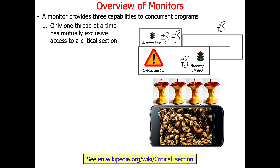We'll use this notation you'll see over and over again. We have a critical section, represented by this little box. As you can see, there's only one thread at a time that can be in there running. Other threads that want to get into the critical section have to block, waiting their chance to get in and have exclusive access to the resources — typically the fields and so on — inside the critical section.